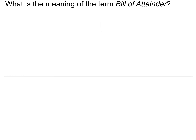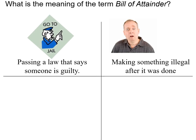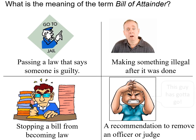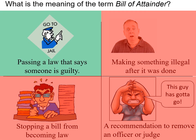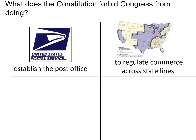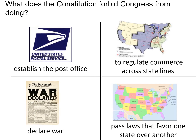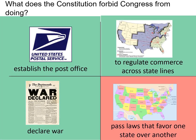What is the meaning of the term bill of attainder? A bill of attainder is passing a law that says someone is guilty — when Congress tries to act like they're a court. What does the Constitution forbid Congress from doing? Passing laws that favor one state over another — the states have to be treated equally.